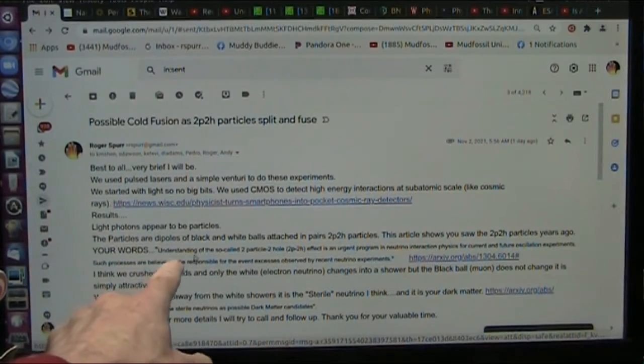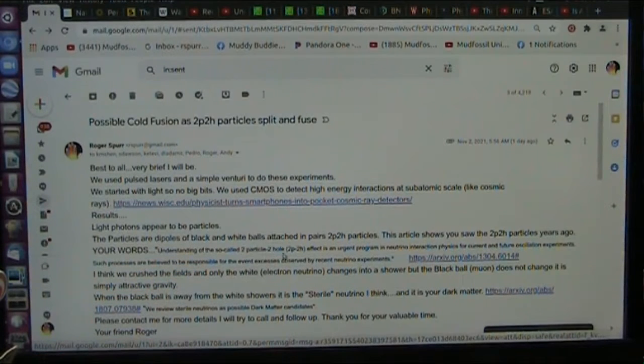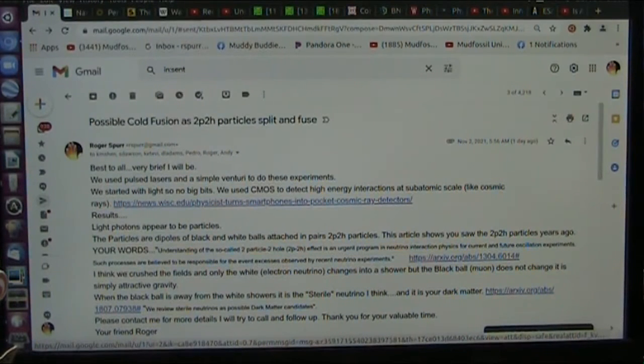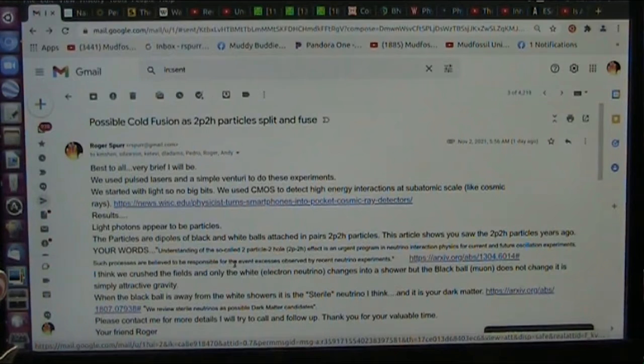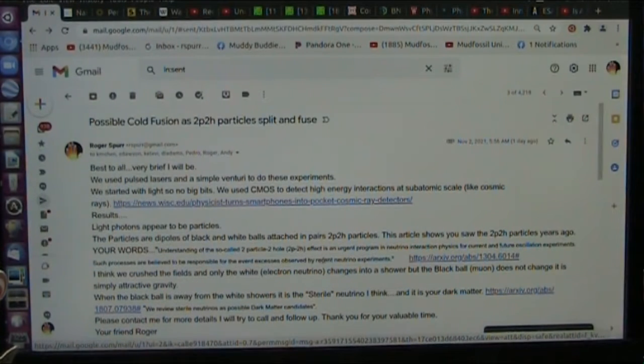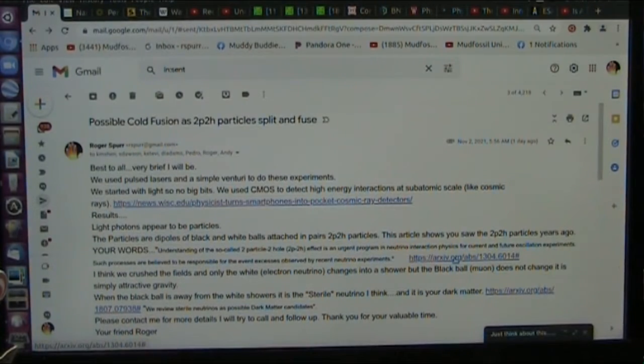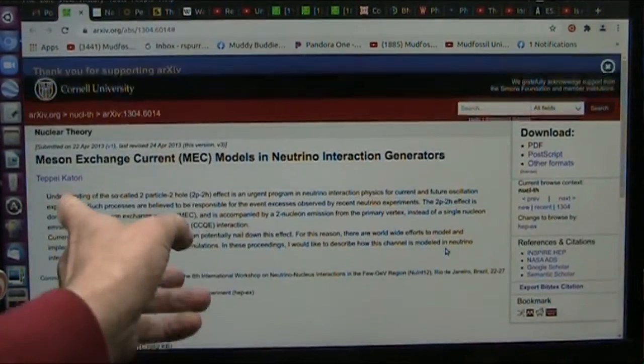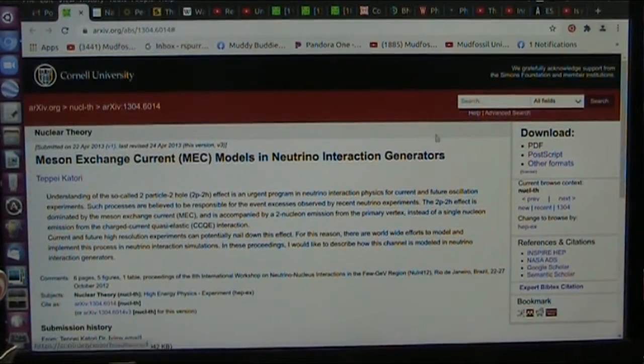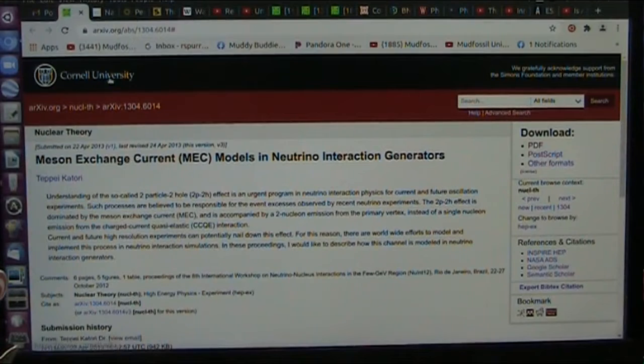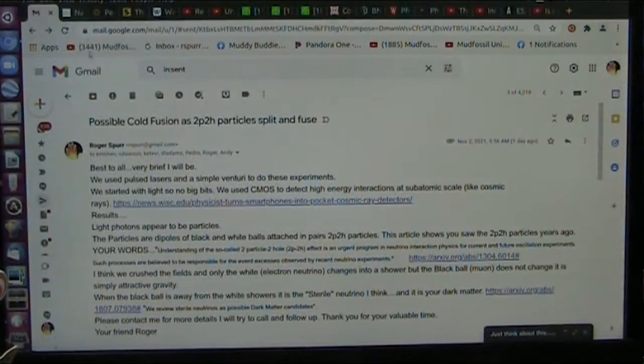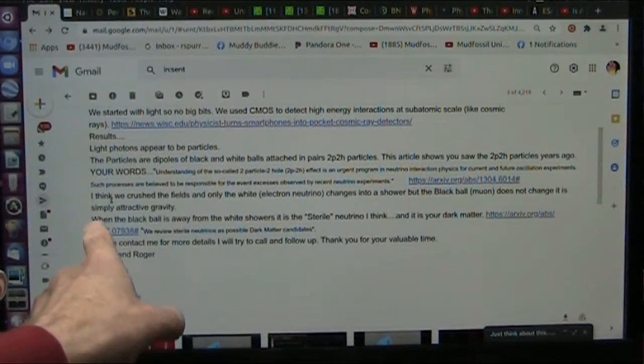Your words were, our understanding of the so-called two-particle, two-hole, 2p2h effect is an urgent program, urgent program, in neutrino interactions, interaction physics, for current and future oscillation experiments. Such processes are believed to be responsive for the event excesses, increased energy, observed by recent neutrino experiments. And here is their paper oddness. The 2p2h particles. This is Cornell. So we know we have that. And that's their words.